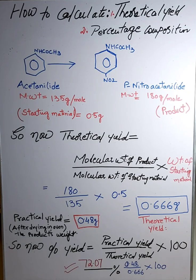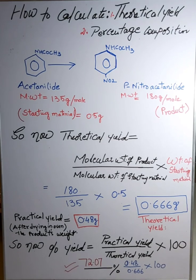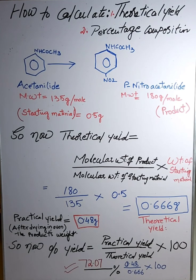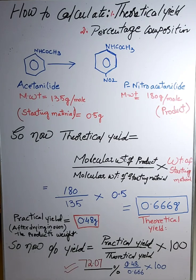We cooled it in the ice bath as it was warm and we never wanted to exceed the temperature. Then we added five to six drops of concentrated nitric acid and sulfuric acid — that is the nitrating mixture. If somebody asks you what a nitrating mixture is, you must be bold enough to answer. We then added this nitrating mixture to the solution of acetanilide in a drop-wise manner.